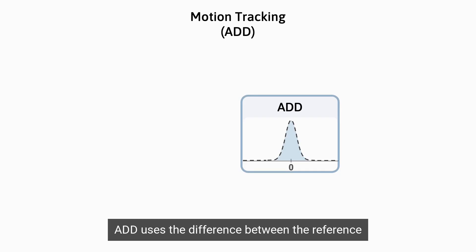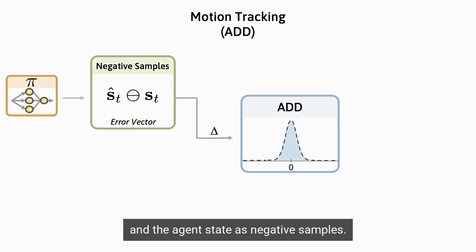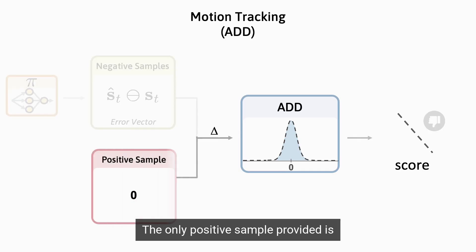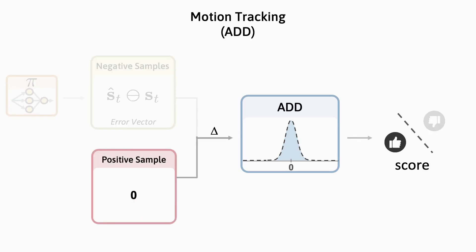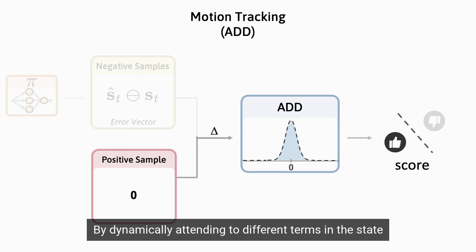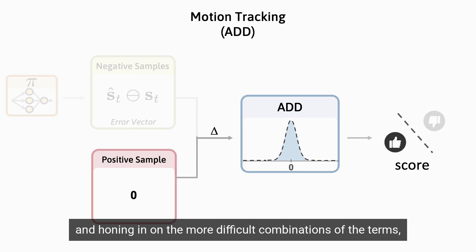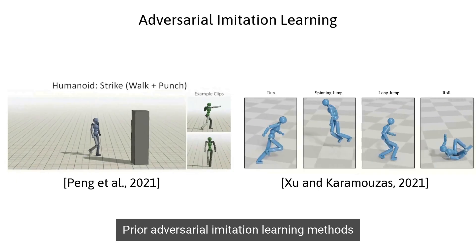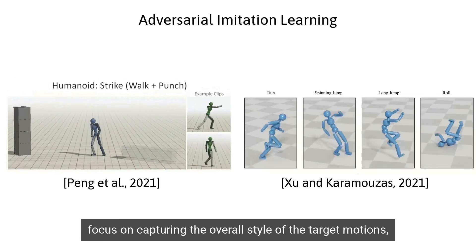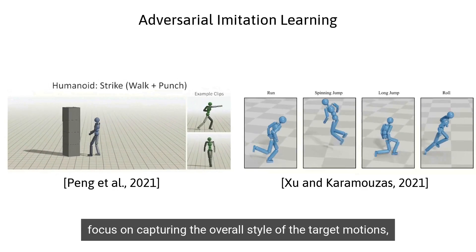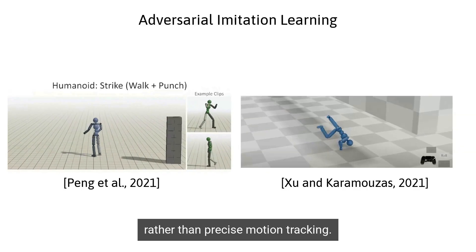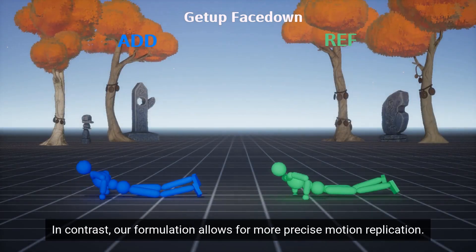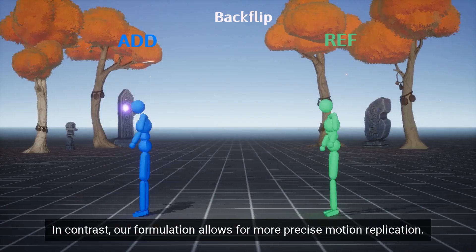ADD uses the difference between the reference and the agent state as negative samples. The only positive sample provided is a zero vector, representing perfect tracking. By dynamically attending to different terms in the state and honing in on the more difficult combinations of the terms, ADD generates tracking rewards that continually challenge the policy. Prior adversarial imitation learning methods focus on capturing the overall style of the target motions rather than precise motion tracking. In contrast, our formulation allows for more precise motion replication.